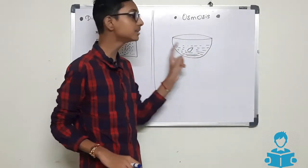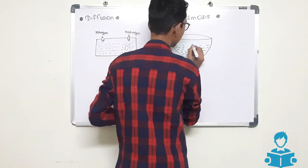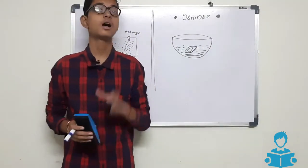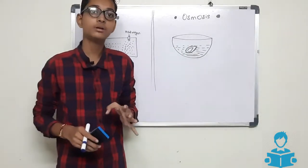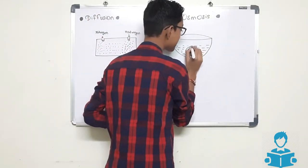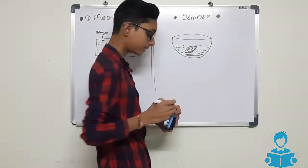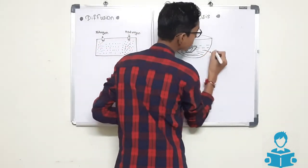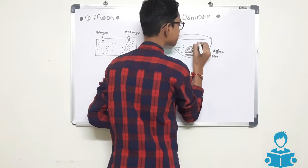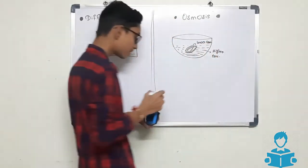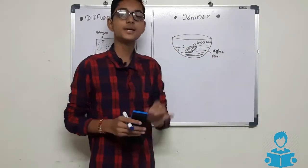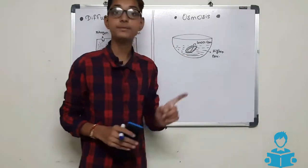When you soak this almond overnight in the water, you will see in the morning that the size of the almond has increased. This happened with the help of osmosis — the water molecules moved inside the almond because there is higher concentration outside the almond and lower concentration inside the almond. So the higher concentration molecules move towards lower concentration through a semi-permeable membrane, which caused the almond to increase in size.